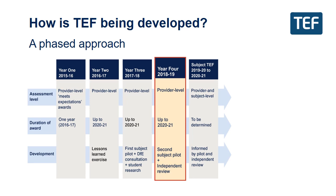The implementation of TEF has taken a phased approach. TEF year one was an exercise in which all providers who passed a baseline quality standard received a 'meets expectations' award. TEF year two was the first exercise in which judgments were made by a review panel, using a combination of metrics data and additional evidence submitted by providers. TEF year three was informed by the outcomes of the government's lessons-learned exercise, which focused on the practical operation of the TEF, and also saw the first year of subject-level pilots, testing two different approaches alongside a government consultation and independent student research.